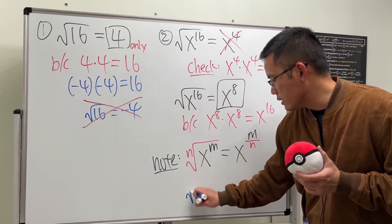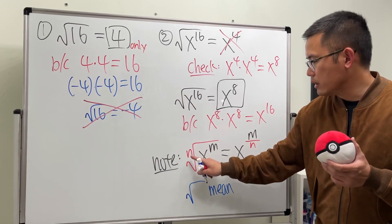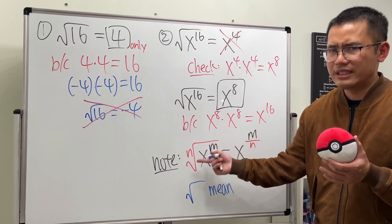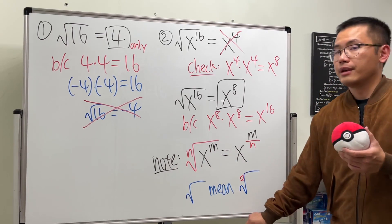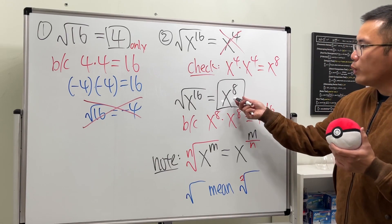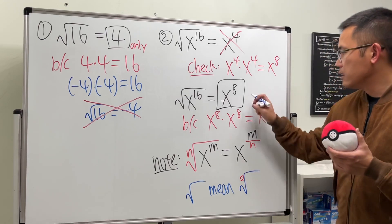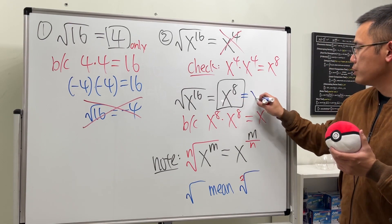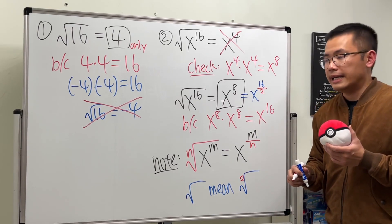Alright, so the quick way to get x to the 8 is we can look at this and say this is just equal to x to the 16, and then we divide it by 2, and that's how we get the x to the 8.